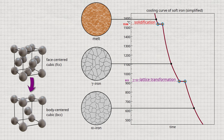Note that during the transition from the face-centered cubic to the body-centered cubic lattice structure, the shape of the individual grains changes due to diffusion processes. While the grains of gamma iron have a more polygonal shape, the grains of alpha iron have a more round shape.